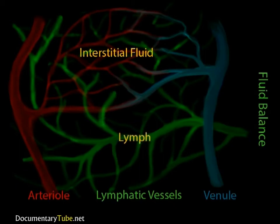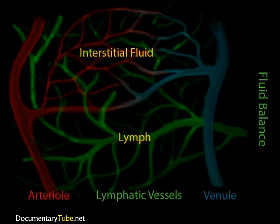These vessels eventually deliver the lymph to locations where the lymph can be cleansed of debris and checked for the presence of pathogenic organisms. How it gets the lymph there is pretty amazing. There is no heart for this system of vessels to pump the lymph around. So, how does the lymph get to the locations it needs to be delivered to?